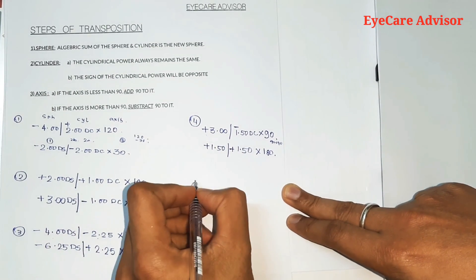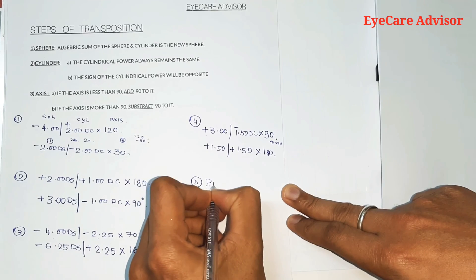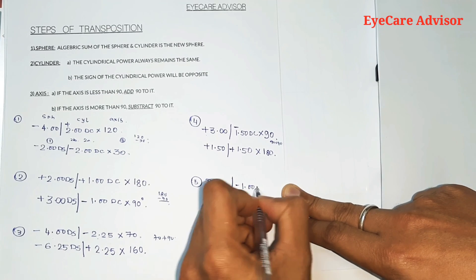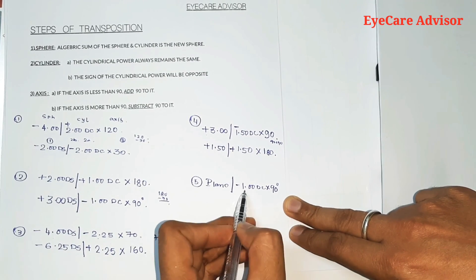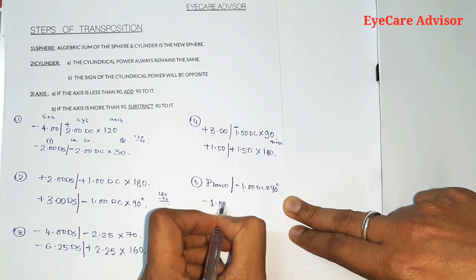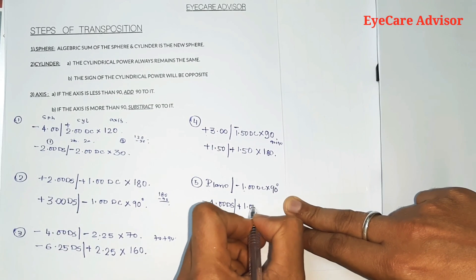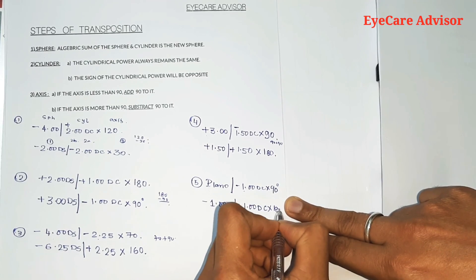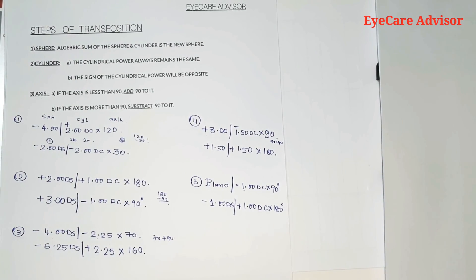Example 5: plano — no spherical power — with minus 1 diopter cylindrical, axis 90 degrees. Plano means 0, so 0 plus minus 1 gives a new sphere of minus 1 diopter. The sign of the cylinder becomes opposite, so it will be plus 1; the cylindrical power remains the same. The axis is 90 or less, so add 90: 90 plus 90 equals 180 degrees. As you can see, it is very easy to do the transposition once you follow the steps.